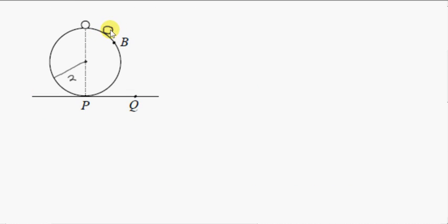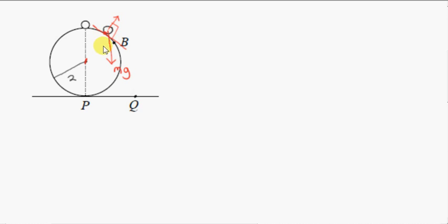Let's look at the forces acting on the particle at some intermediary position between its initial position and its final position at B. We have its weight vector mg pointing vertically down. And because the particle is in contact with the sphere, we have a contact force acting on the particle which is perpendicular to the surface of the sphere. Because this is perpendicular to the tangent line here, this vector is on a line that connects the particle to the center of the circle — because a line joining the center of a circle to the point of contact of a tangent is perpendicular to the tangent.